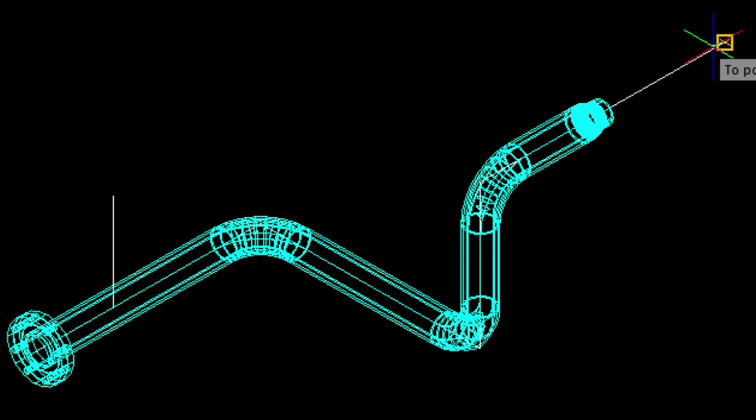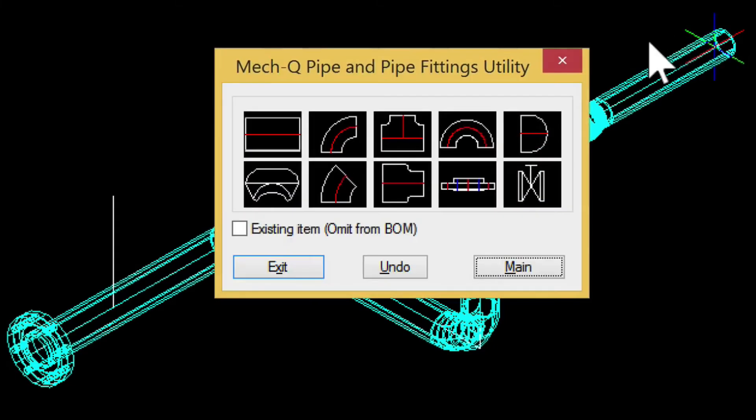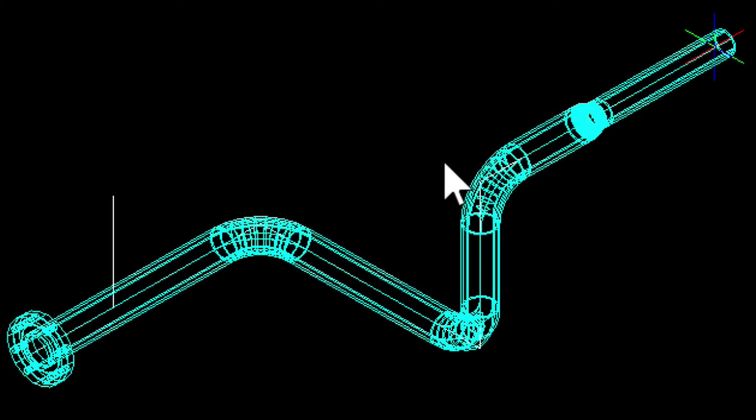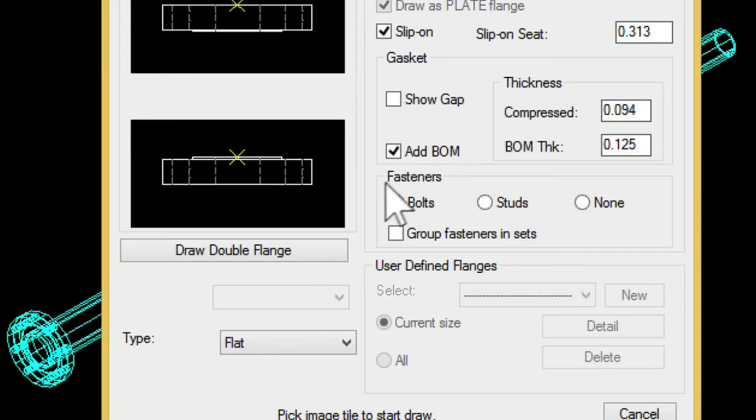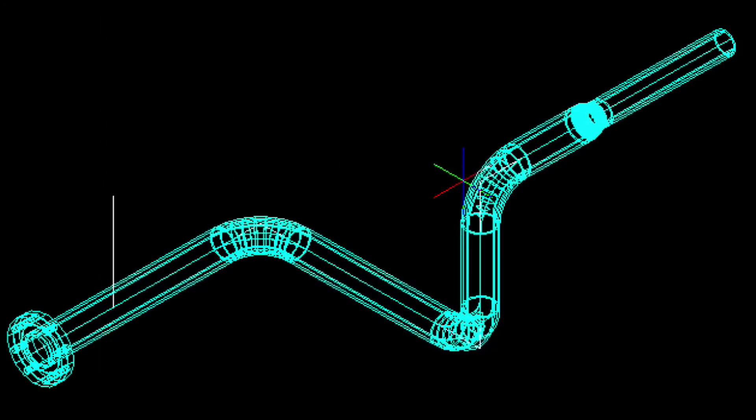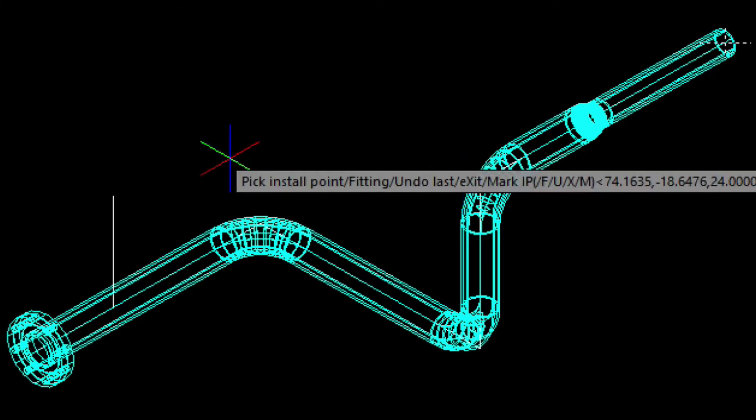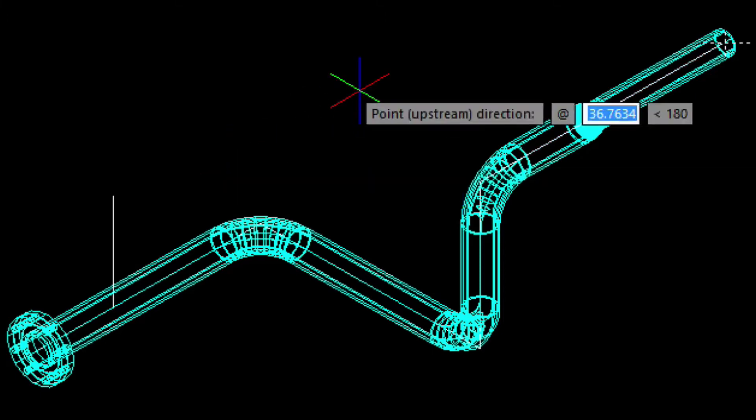And at the same time, maintaining the butt welded fitting type and material. So, let's put in a straight piece here. And then to finish the run, I'll add another flange. MEC-Q recognizes we're at 3 inch and auto selects the matching flange. See what I mean? This couldn't be any easier.